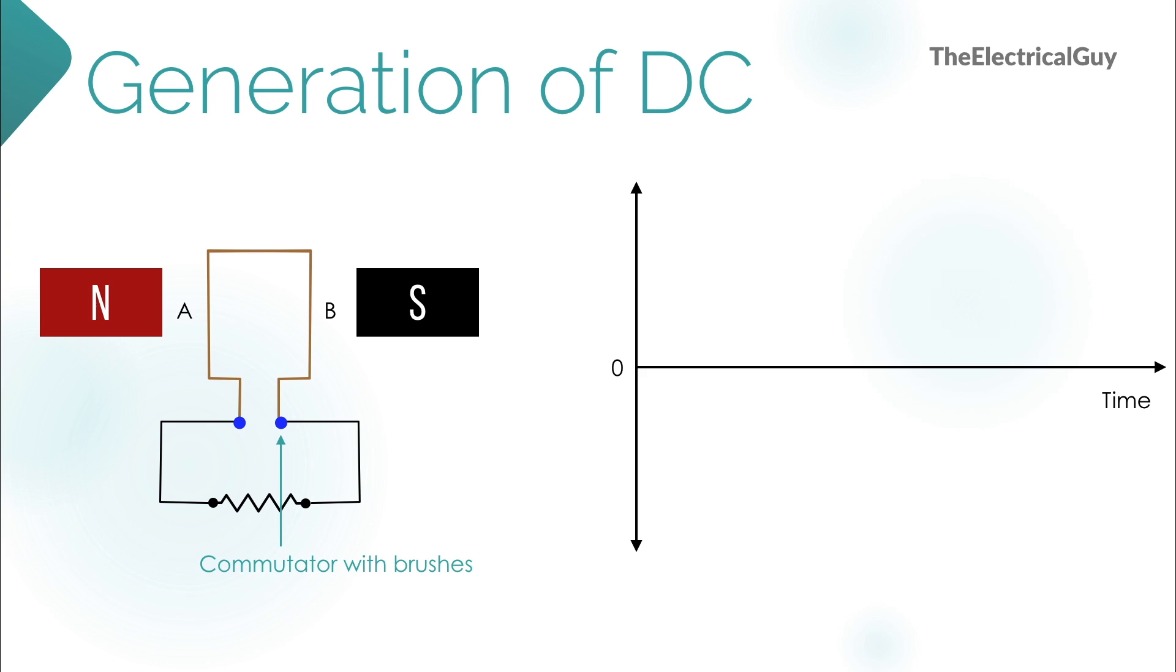What commutator does is that every time the polarity is about to change, it makes the brushes to change their position and hence we get a voltage with a constant polarity. The voltage will vary or pulsate but will never change the direction. But as we are making the brushes change their position every time, it causes sparking and heat which is very obvious. If we make the coil rotate faster the problem of sparking and heating will increase further. Also to get the smoother waveform we need to add more coils to the machine. This makes the construction of DC generator complex and costlier and hence generation of AC is very cheaper and efficient than DC.